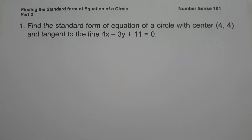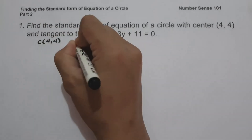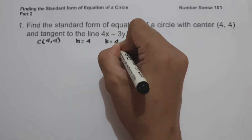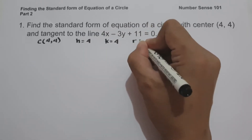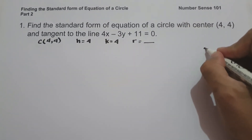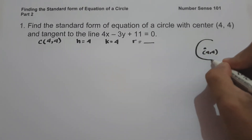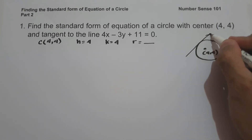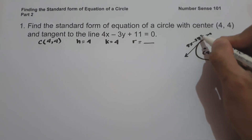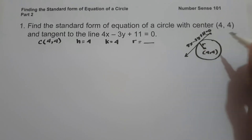Let us identify first our given. Our center is (4,4), so the value of h is 4 and k is 4, and to find the standard form we are looking for the radius. If we illustrate this, we have (4,4) as our center and a circle tangent to the line 4x minus 3y plus 11 equals 0, and this will be our radius.